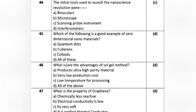Question 21: Which of the following is a good example of zero-dimensional nanomaterials? Option A: quantum dots. Option B: fullerenes. Option C: colloids. Option D: all of these. The correct answer is Option D: all of these.